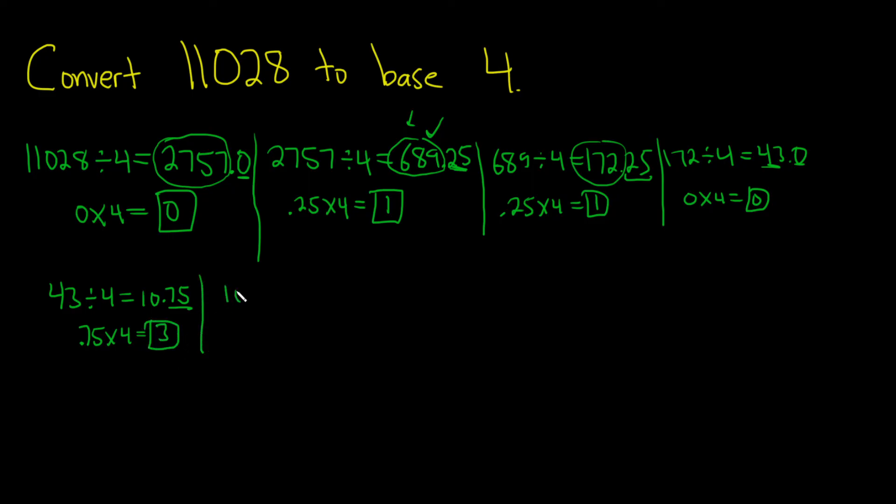Then you go to the next one, 10. 10 divided by 4. This time the remainder should be 2, right? 4 goes into 10 twice, and you have 2 left over. But let's work it out. 10 divided by 4. I got 2.5. Then you take the decimal. So 0.5. Multiply it by 4, which is 2.